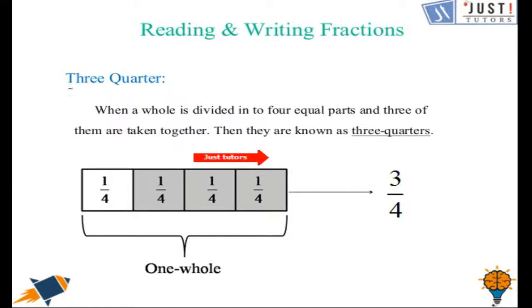Now 3 quarters. It says 3 quarters which means if we're taking 3 one-quarters at a time, that will be equal to 3 quarters. Here we have divided 1 whole into 4 equal parts. Each part denotes 1 quarter and we are taking 3 at a time. So that will be 3 quarters. And we write it as 3 over 4.